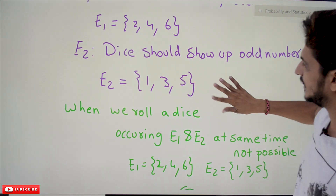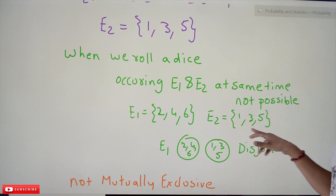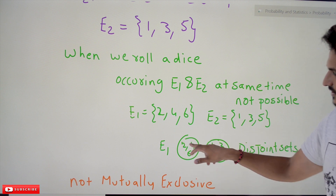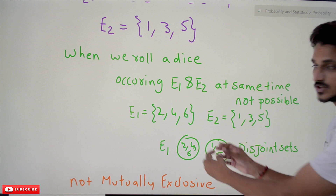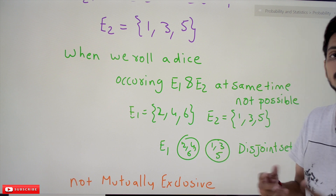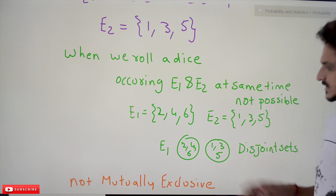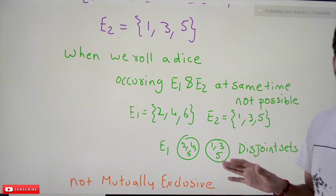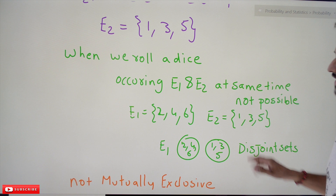E1 = {2, 4, 6} and E2 = {1, 3, 5}. In set format, set E1 consists of elements 2, 4, 6 and set E2 consists of elements 1, 3, 5. These two sets are disjoint sets, meaning they are not overlapping. Mutually exclusive event sets are disjoint sets, meaning the intersection of these two sets is null — nothing. This point is also important for understanding coming classes.